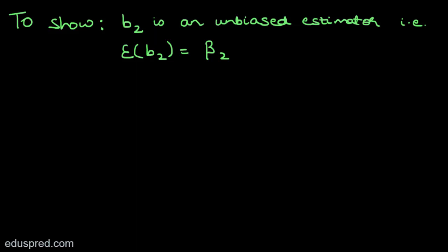After showing that B2 is a linear estimator, in this video I'm going to show that B2 is an unbiased estimator as well. I'm going to show that the expectation of B2 is equal to the true population parameter, that is beta2.